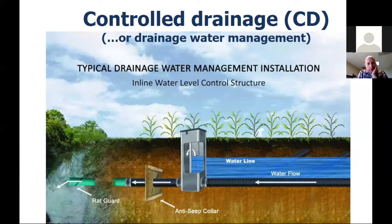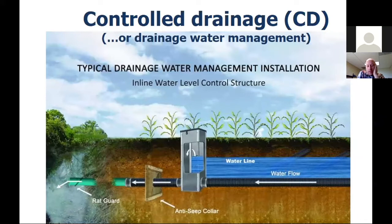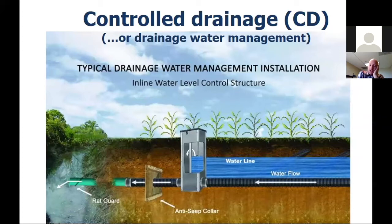Let's jump into our first best management practice: controlled drainage, abbreviated CD. Controlled drainage is simply manipulating the water table in the field using engineered structures. We do that because we can reduce the total volume of water that drains from the field. Typically in the Midwest, this is done by holding the water table back during the non-growing season — say November to April 1st — raising the gates to about 15 centimeters below the soil surface, effectively slowing down the subsurface flow rate compared to a free drainage tile system.